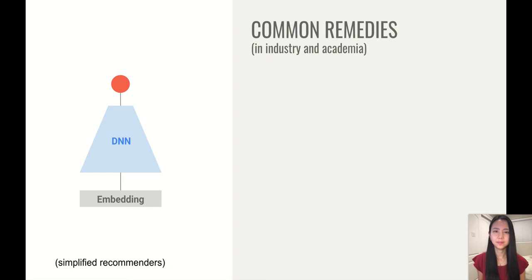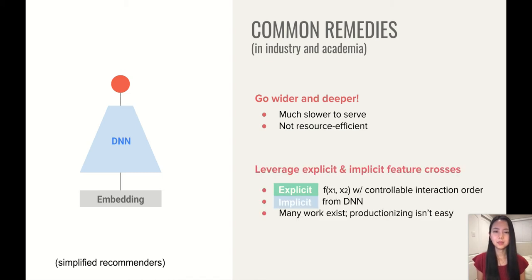So what are the common remedies for this? There are two common things. One is to simply make the model much wider and deeper. And this also aligns well with the universal approximator theorem for DNNs. But this would also make your model much slower to serve. And another common thing is to leverage those explicit and implicit feature crosses. And this direction has heavily been studied in academia. So explicit feature crosses means there is an explicit formula for your feature interaction or feature cross with controllable interaction order. For example, x1 times x2. While implicit feature crosses refer to those interactions that we are able to learn from DNNs.